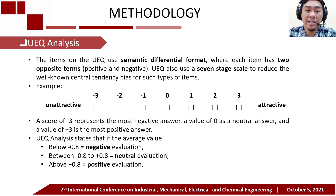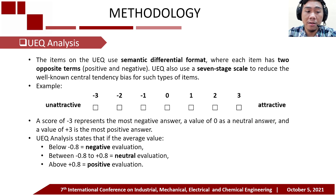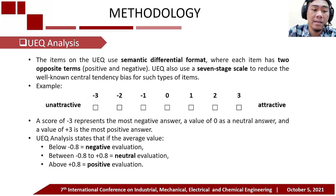The items on the UEQ use a semantic differential style format, where each item has two opposite terms: positive and negative. UEQ also uses a 7-point scale to reduce the well-known central tendency bias for such types of items. For example, an item has an unattractive side as negative and an attractive side as positive. Each item uses a scale from negative 3 to positive 3. A score of negative 3 represents the most negative answer, a value of 0 represents a neutral answer, and a value of positive 3 is the most positive answer. UEQ analysis states that an average value below negative 0.8 indicates a negative evaluation, between negative 0.8 and positive 0.8 is a neutral evaluation, and above positive 0.8 is a positive evaluation.